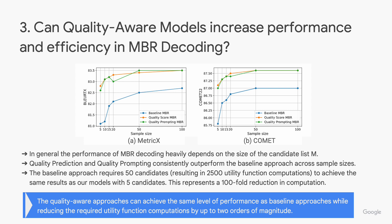Lastly, we took a closer look at MBR decoding. In general, the performance of MBR decoding heavily depends on the size of the candidate list. Here we show that quality prediction and quality prompting consistently outperform the baseline approach across sample sizes. Notably, the baseline approach requires 50 candidates — resulting in 2500 utility function computations — to achieve the same results as our models with just five candidates. This represents a hundred-fold reduction in computations, demonstrating the efficiency of our quality-aware approach.